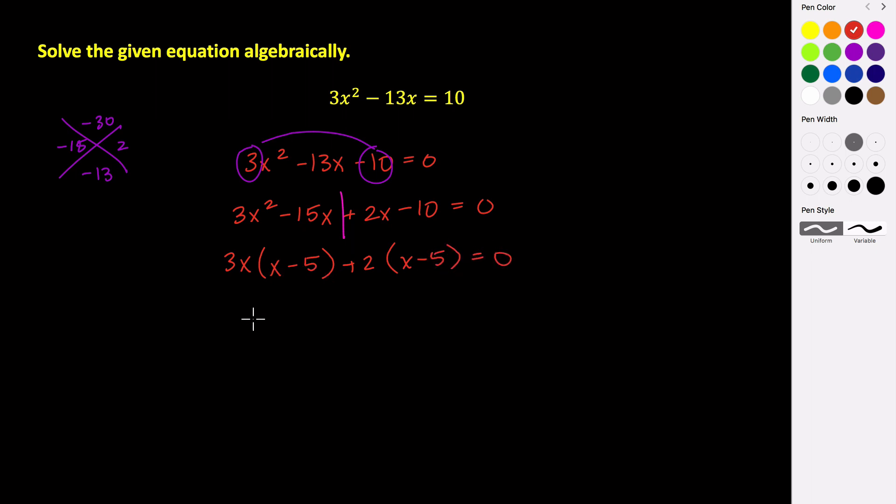Now we have a common factor of x minus 5, so we can factor that out. And then what we're left with is the factor of 3x plus 2. And then all of this equals 0. So now we use the 0 product property. So we take each of these pieces and set them equal to 0. And those will give us the two values that make our original equation equal to 0.